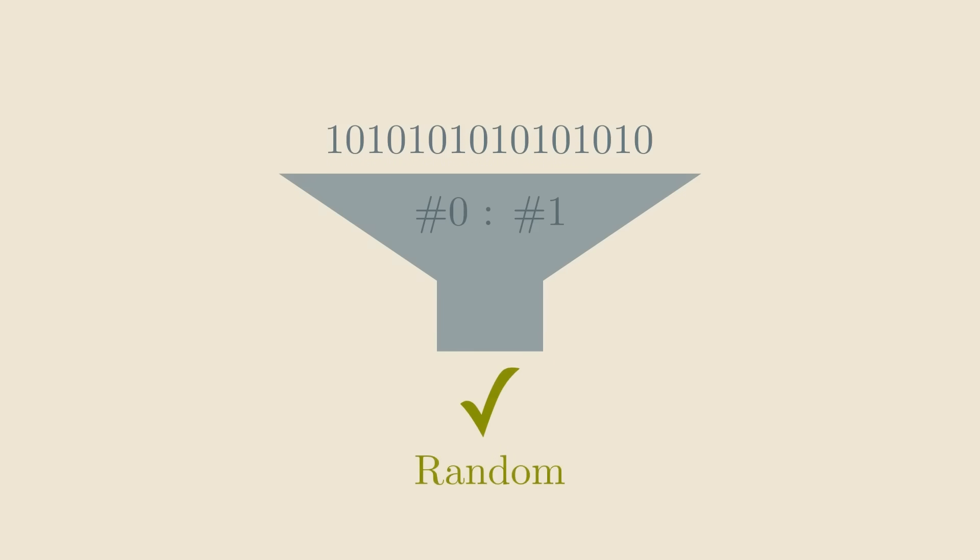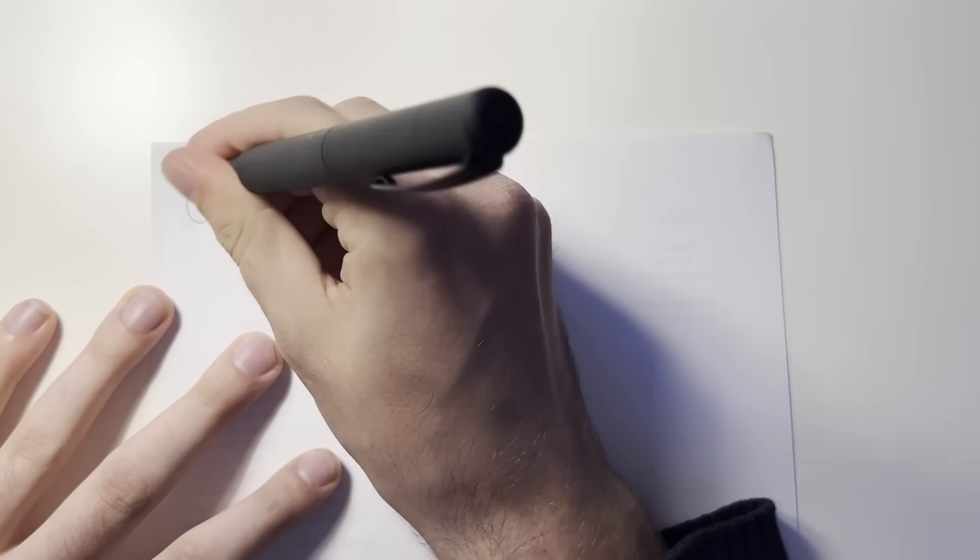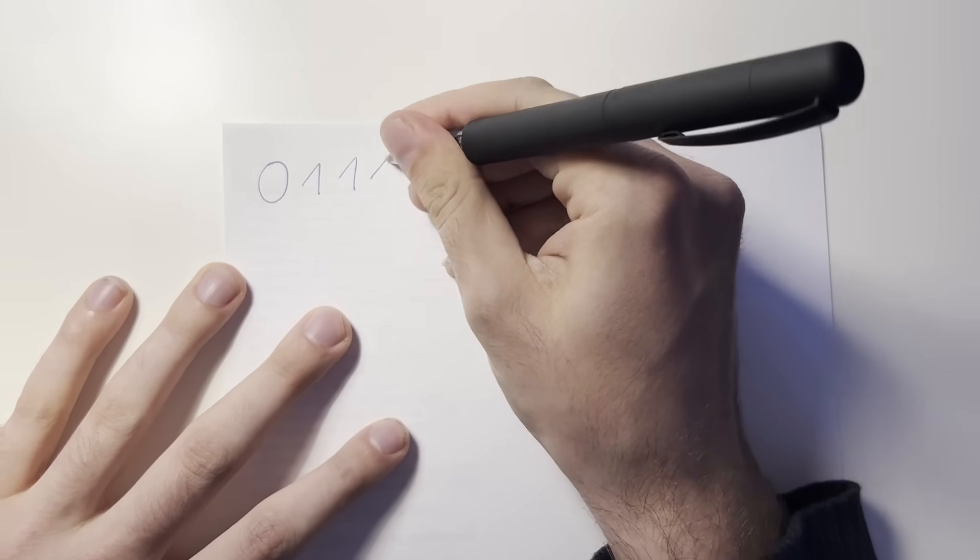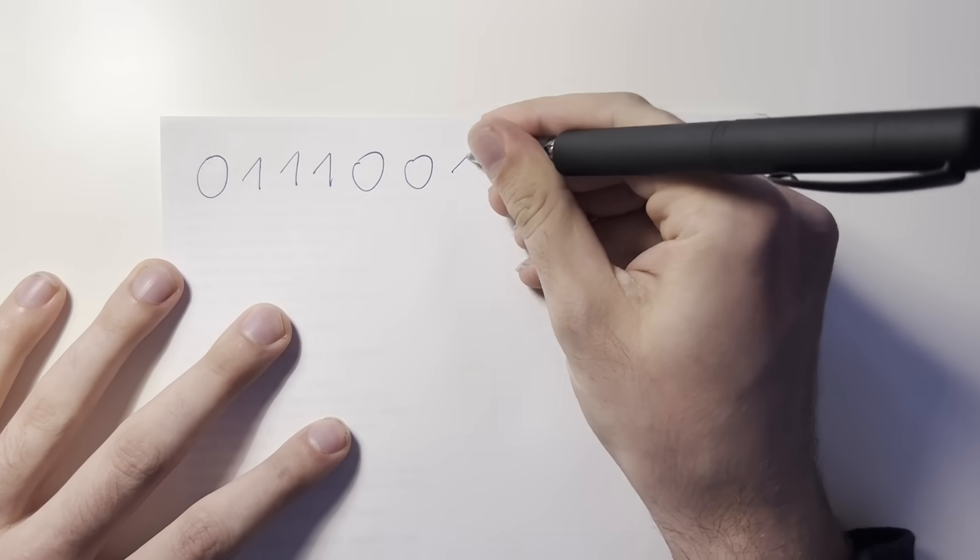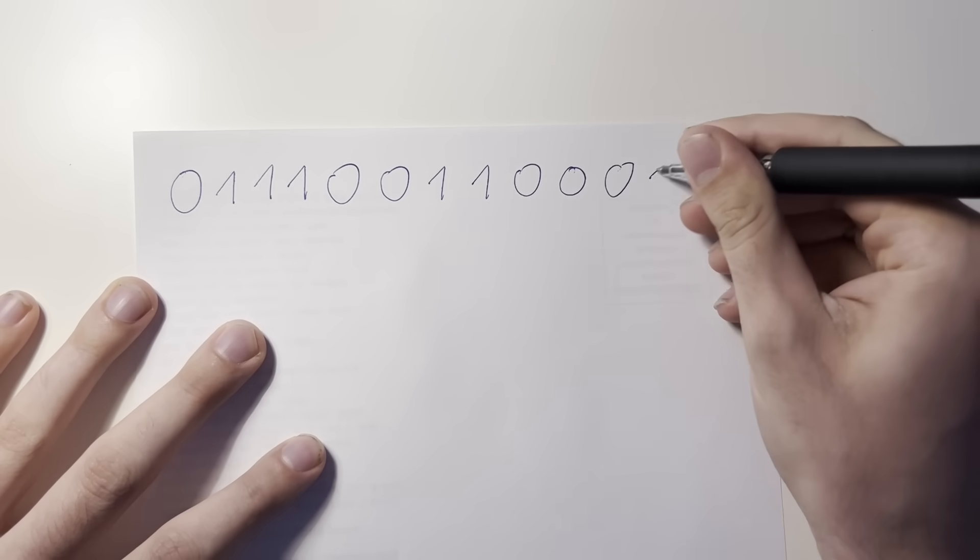But there are much more powerful statistical tests as well. For example, counting the bigrams in the string would already recognize that the string with alternating zeros and ones is not random. By the way, if you try to create a random-looking sequence of bits by just manually writing zeros and ones, this test would probably already catch you, despite being so simple.